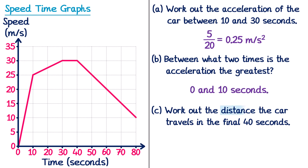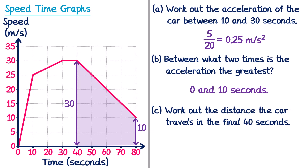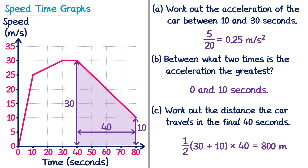In the final part we work out the distance the car travels in the final 40 seconds — that's the area under the graph in the last 40 seconds. This shape is also a trapezium on its side. The parallel sides are 30 and 10, and the height is 40. So distance = ½ × (30 + 10) × 40 = ½ × 40 × 40 = 800 metres.